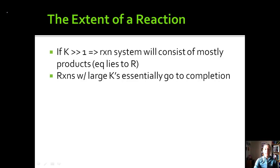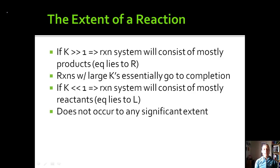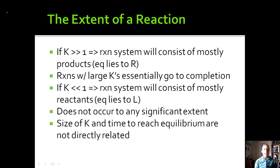If K is much smaller than 1, the system will consist of mostly reactants, and we say the equilibrium lies to the left. This causes the reaction to not really occur to any significant extent. The size of K and the time to reach equilibrium are not directly related — even if K is very large or very small, that just indicates the position of equilibrium, not the time it takes to get there.